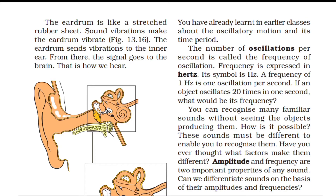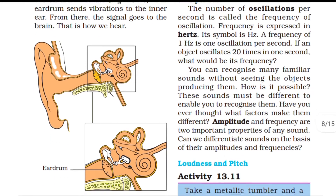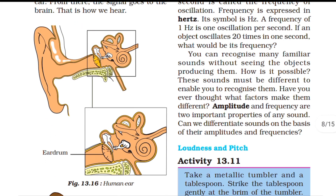The number of times an oscillation happens per second is the frequency. The unit of frequency is hertz, written as Hz. One hertz means one oscillation per second. If an oscillation happens twenty times per second, we write 20 Hz.